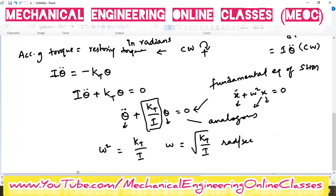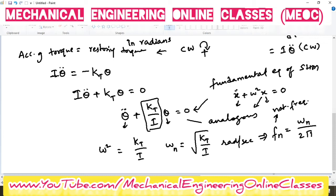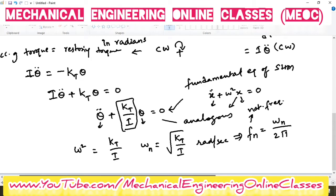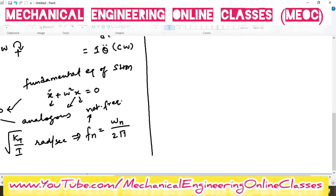Since this is free vibration, the angular speed obtained is the natural angular speed ωn. The corresponding natural frequency fn can be obtained using fn = ωn / (2π). Substituting the value of ωn, the natural frequency is: fn = (1/2π)·√(KT/I), in Hertz.